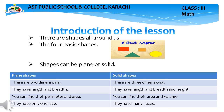Solid shape — you can find their area and volume. Jabke solid shape ka aap us ka area maalum karain gay aur volume maalum karain gay. They have only one face — plain shape ki ek shakal hoti hai. And solid shape ki jo hoti hai, they have many faces — is ki bohat saari faces hoti hain.